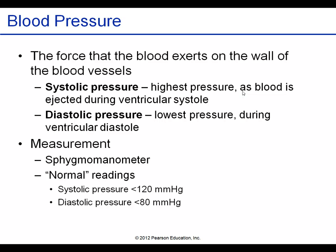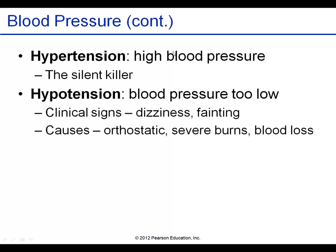Blood pressure is measured with a sphygmomanometer, recording the systolic (high) and diastolic (low) pressures. High blood pressure — hypertension — and significantly low blood pressure — hypotension (below 90 over 60) — both cause problems. Hypertension can cause significant tissue damage, while hypotension leads to insufficient nutrition reaching vital organs like the brain or kidneys.